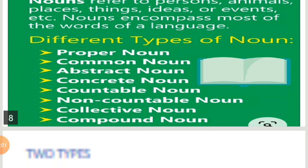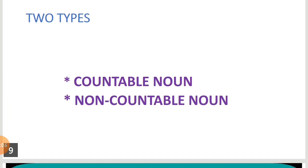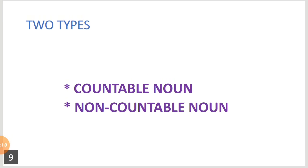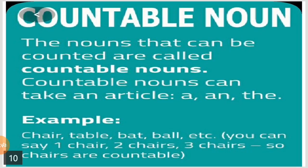Now we are going to see only these two types: countable noun and non-countable noun. A countable noun is whatever nouns are able to be counted. Nouns that can be counted are called countable nouns. Countable nouns can take the articles 'a' and 'the'.